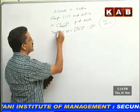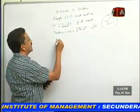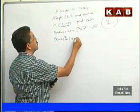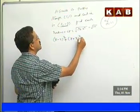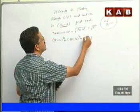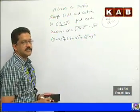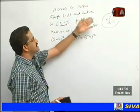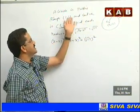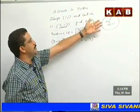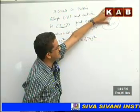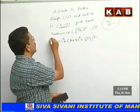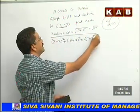We already have the center, so by our earlier formula the circle equation is (x − 2)² + (y + 3)² = (√17)² = 17. That is the equation of the circle. In this case the radius is not directly provided but is indirectly given, so first we find the distance and then proceed.